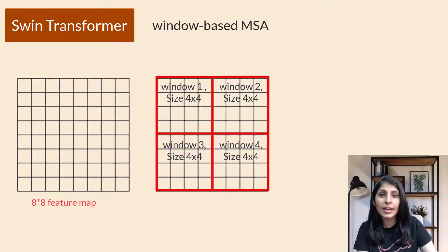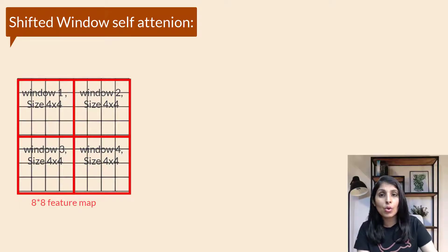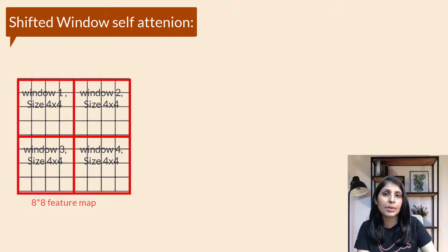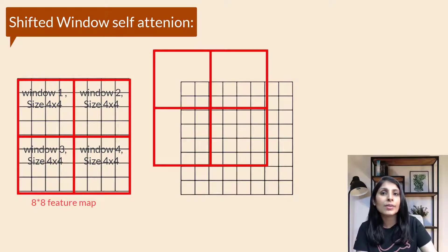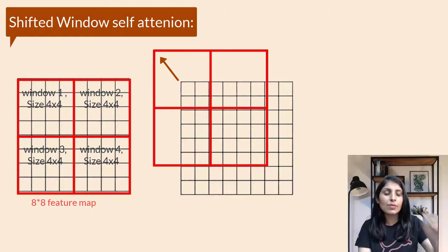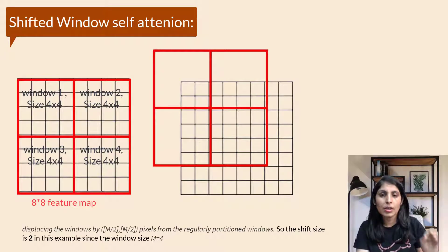Window-based self-attention cannot provide connections between windows — it only calculates attention within one window. To provide cross-window connections while maintaining computational efficiency, a shifted window partitioning approach is proposed. In this approach, we displace the windows from their regular positions. The shift size is half the window size M, so if M equals 4, the shift size is 2.